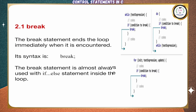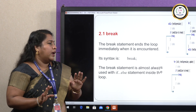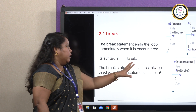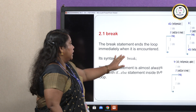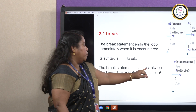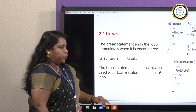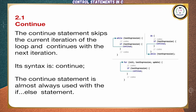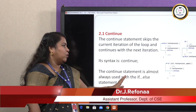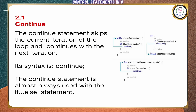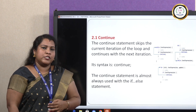Next is the break statement. The break statement ends the loop immediately whenever it is encountered. The syntax is 'break;'. The break statement is mostly used in switch cases and looping statements — for loop, while loop, and do-while loop. Within a while loop, if the break is encountered in between, it will directly come out. The break statement is almost always used within an if-else statement inside a loop. The continue statement skips the current iteration of the loop and continues with the next iteration. The syntax is 'continue;'. The continue statement is almost always used in if-else statements. Hence, we have seen the control statements in C. Thank you.